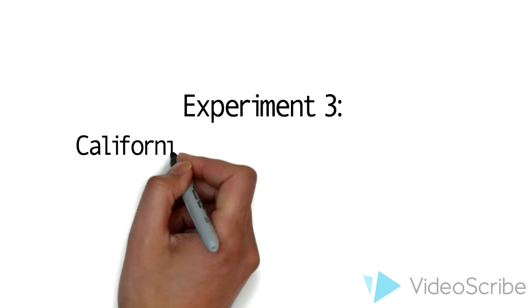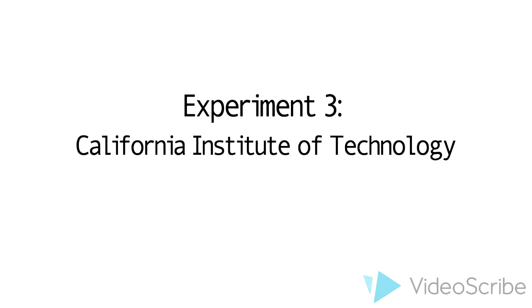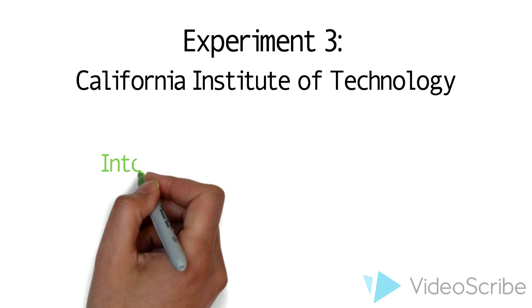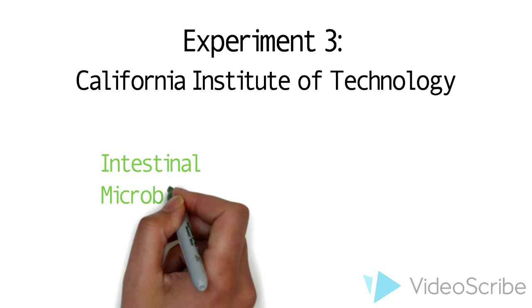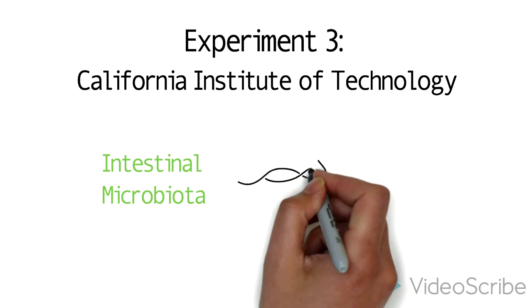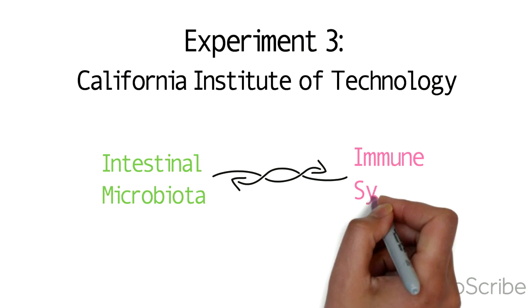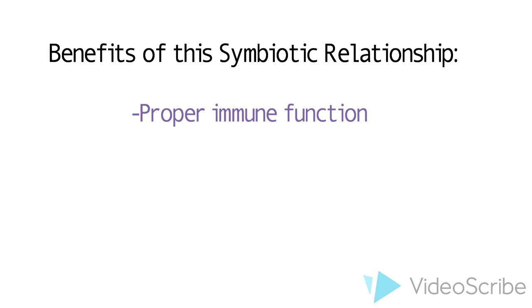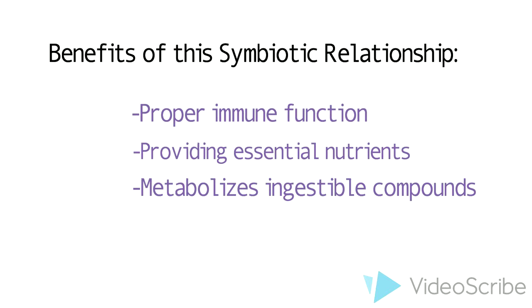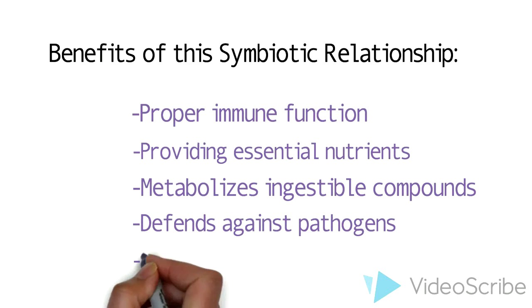A review of findings done at California Institute of Technology analyzed many experiments involving immune systems and intestinal microbiota. A series of experiments on germ-free mice have revealed that the microorganisms in the intestinal tract may be more closely intertwined with the immune system than previously thought. The symbiotic host-bacterial relationship has resulted in proper immune function regulation, provision of essential nutrients, metabolism of ingestible compounds, defense against pathogen colonization, and help in developing intestinal architecture.